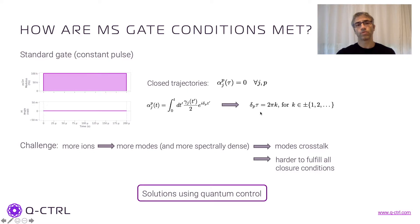So the problem with that is that when we start to consider larger gates, we increase the number of ions. Therefore, we also increase the number of modes. And so we have more and more conditions like these to be satisfied for each of the modes. And this becomes harder and harder to fulfill.